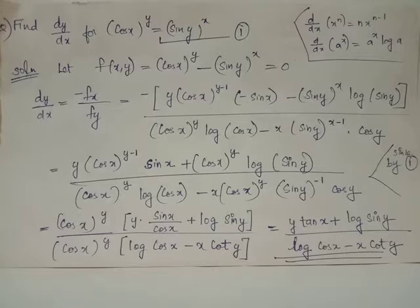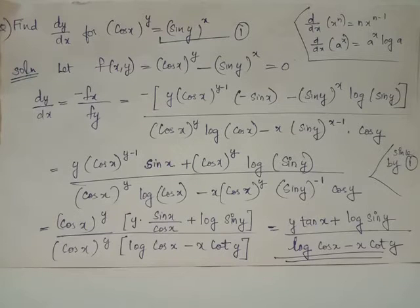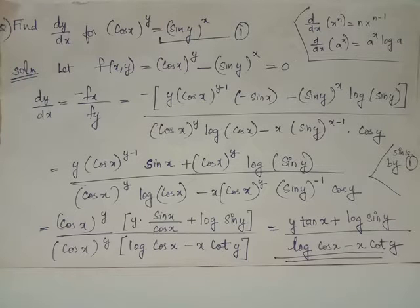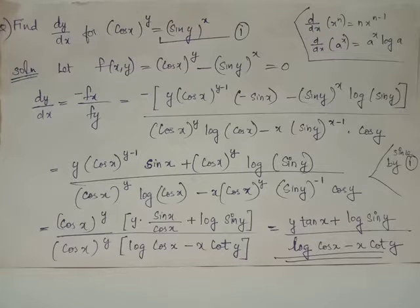Find dy by dx for the equation cos x whole raised to y equals sin y whole raised to x. Let us call this equation 1. From equation 1 we have cos x whole raised to y minus sin y whole raised to x equals 0, and let us denote this as f of x, y — a function on variables x and y. Thus we have rewritten equation 1 in the form f of x, y equals c, where c is a constant, and here c equals 0.